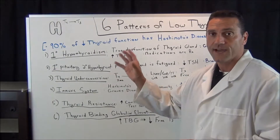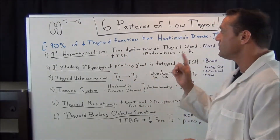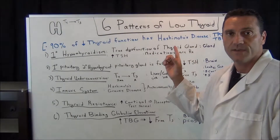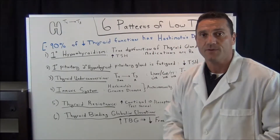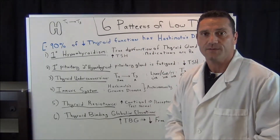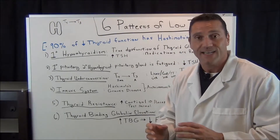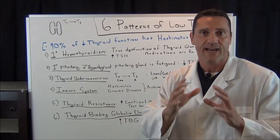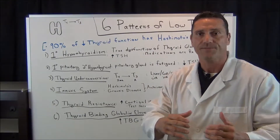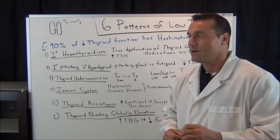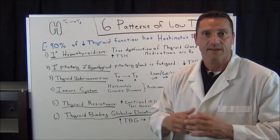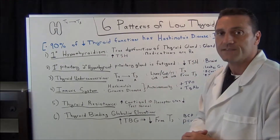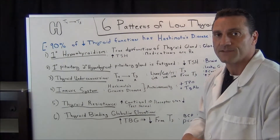90% of low thyroid function patients do have Hashimoto's disease. Hashimoto's is an autoimmune disease in which the immune system is attacking the thyroid gland — attacking its own tissue. So 90% have an autoimmune condition. But I want to go over six primary patterns.